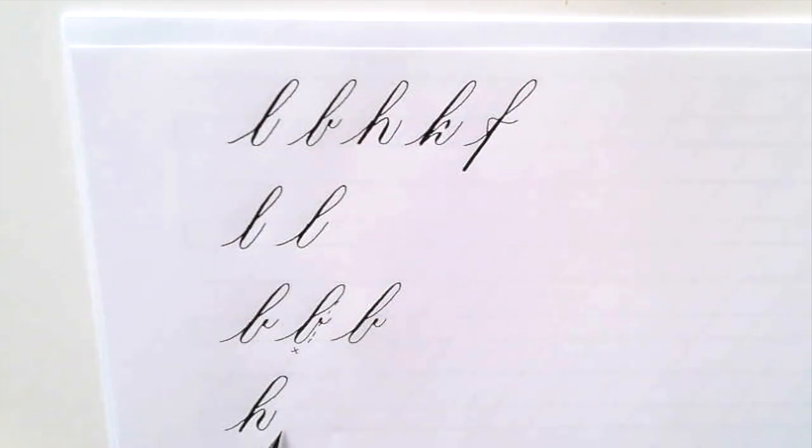I'll try one more time. In-stroke, loop up and over, heavy down, increasingly, this is the dynamic one, and then add the compound curve.